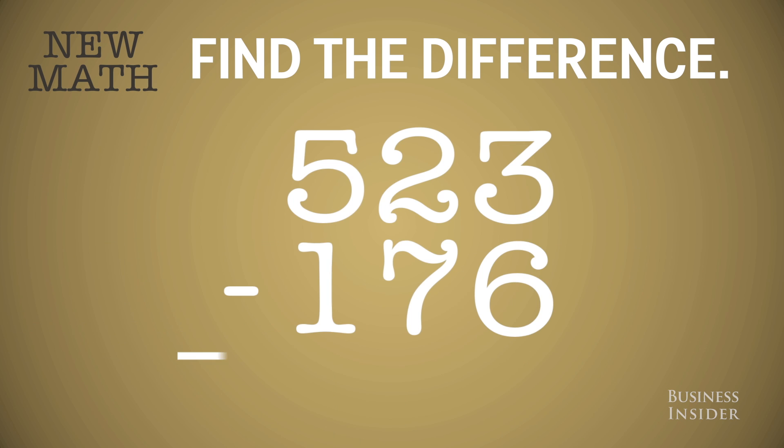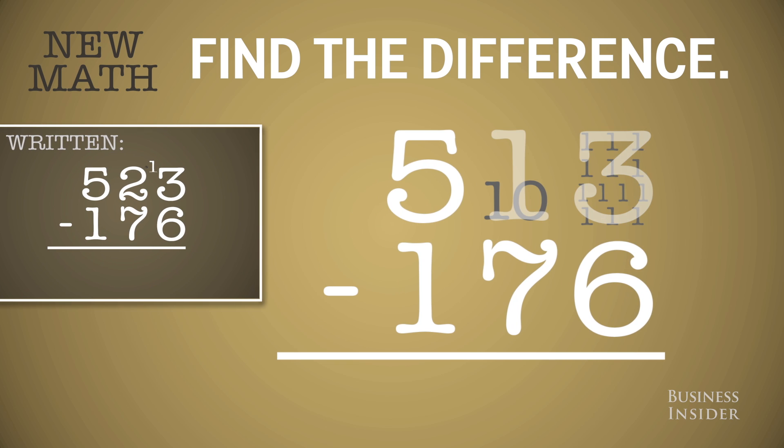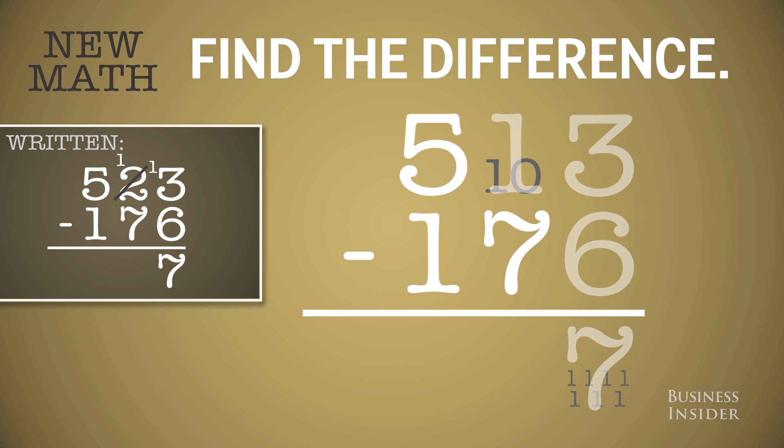You can't take 6 from 3, so you need to regroup your 10s. Instead of 2 tens, you have 1 ten and 10 ones, which you add to your 3 ones. So now, 6 ones from 13 ones is 7 ones.